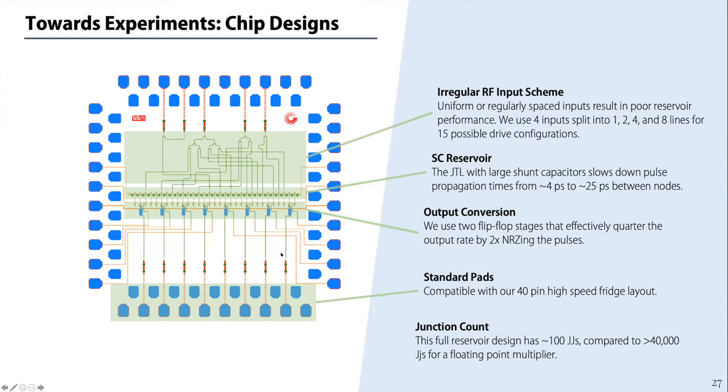Then we have output nodes which are only inserted at some subset. In simulation, the reservoir performance is actually still pretty good if you only use every fourth output. As you go to every one in 10 or something like that, you do start to get degradation of performance. Another thing to note, this whole reservoir has something like 100 Josephson junctions. It's useful to contrast that to other superconducting digital logic, where a single multiplier can take in excess of 10,000 junctions for integer multiplication or up to 40,000 for floating point multiplication.